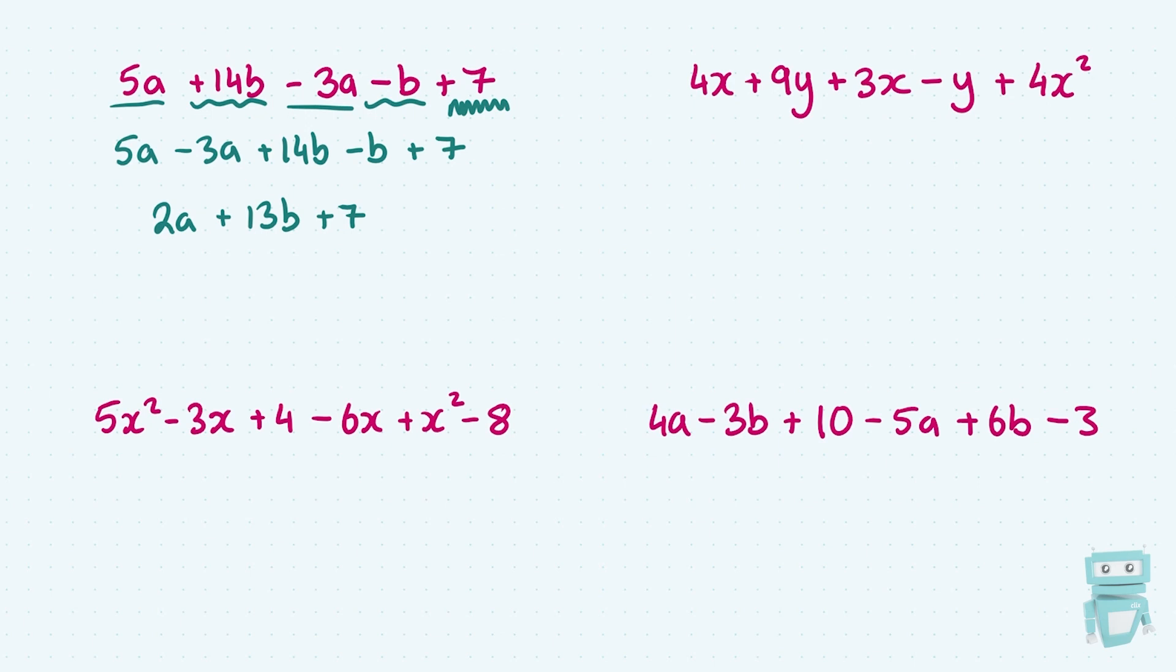On to the next, let's take a look. We have 4x plus 9y plus 3x minus y plus 4x squared. So the first thing I'm going to do is figure out who's going to go together. So I'm going to put the 4x and the 3x together because they're both x's. I'm going to put the 9y and the minus y together, so I have plus 9y minus y. And I've got an x squared term, so I'll put the plus 4x squared here at the end.